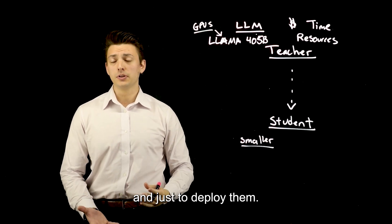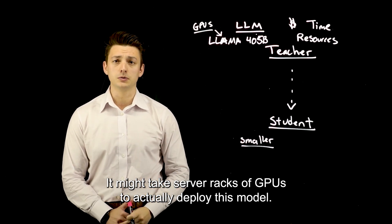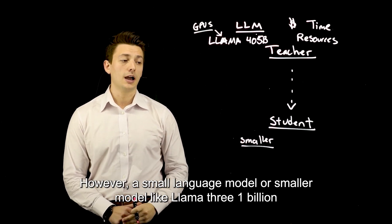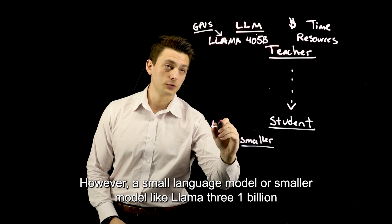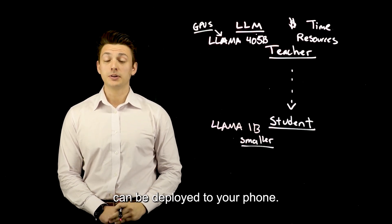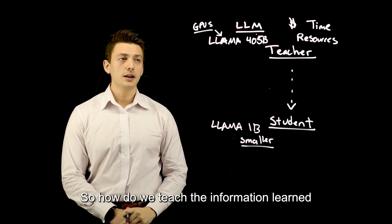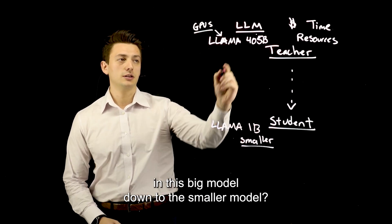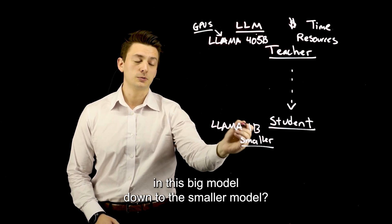And just to deploy them, it might take server racks of GPUs to actually deploy this model. However, a small language model or a smaller model, like Llama 3 1 billion, can be deployed to your phone. So how do we teach the information learned in this big model down to the smaller model?